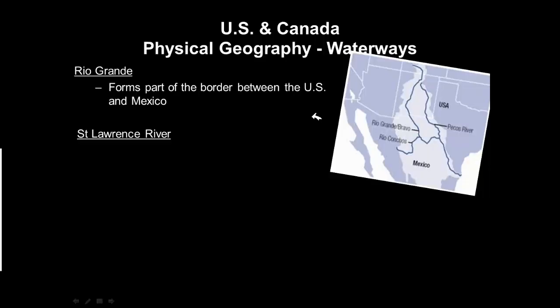The Rio Grande River forms the border between the United States and Mexico. Looking at this graphic, this is the border for Texas — the border between Texas and Mexico is the Rio Grande River. Rivers and mountain ranges often make great boundaries for nations because they form a natural border. Hundreds of years ago we didn't have fences, so a river or mountain range was an easily visible, unmistakable boundary between different countries.